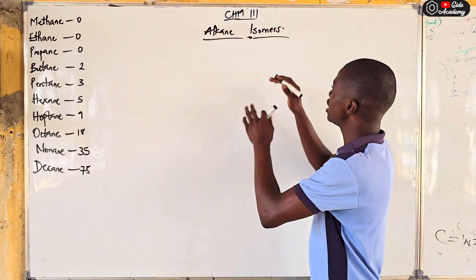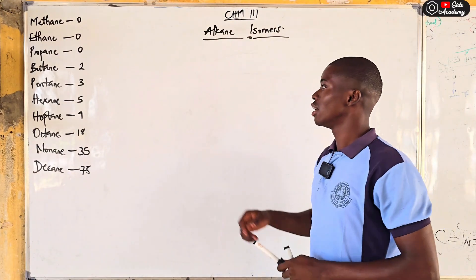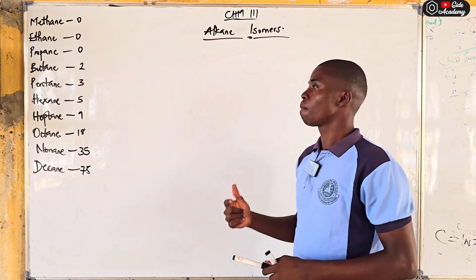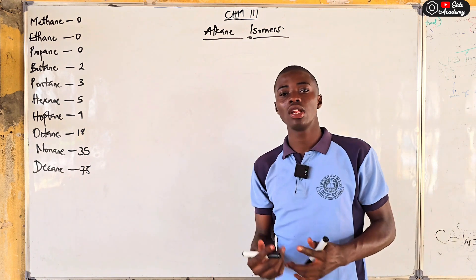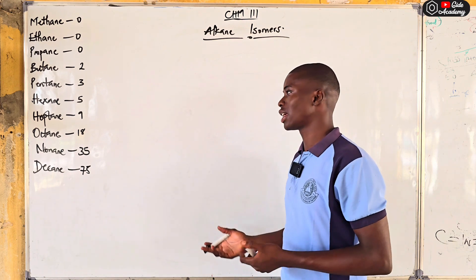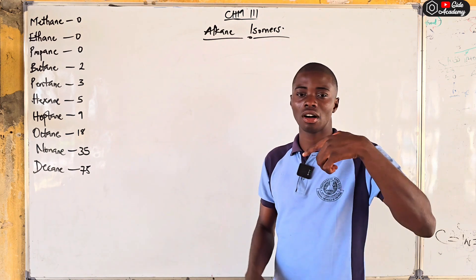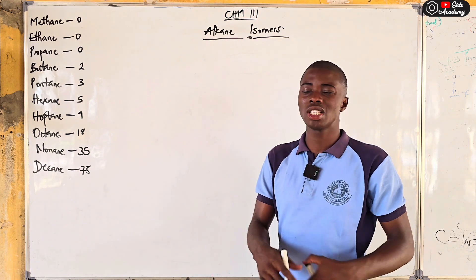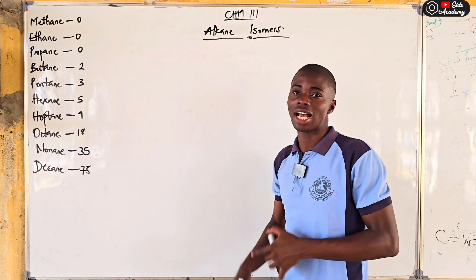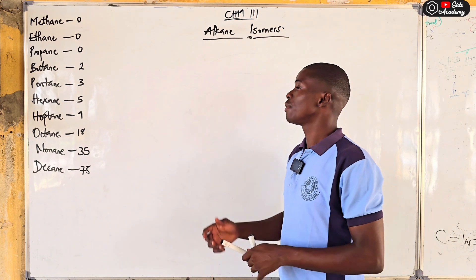Good day everyone. In this video we'll be dealing with alkane isomers — isomeric alkanes. Alkane is an organic compound that has the same molecular formula but different structural formula. We have different kinds of isomerism: geometric, optical, and stereo isomerism. But in this particular video we'll be talking about the structural isomerism of alkanes.